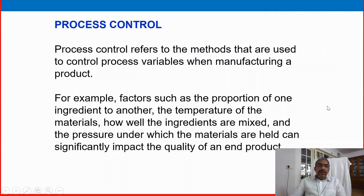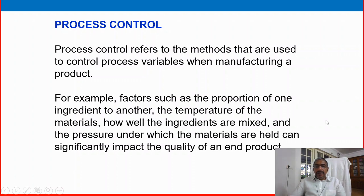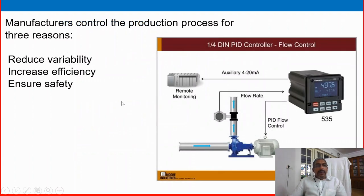Process control refers to the methods that are used to control process variables when manufacturing a product. For example, factors such as the proportion of one ingredient to another, the temperature of the materials, how well the ingredients are mixed, and the pressure under which the materials are held can significantly impact the quality of an end product. Manufacturers control the production process for three reasons: reduce variability, increase efficiency, and ensure safety.